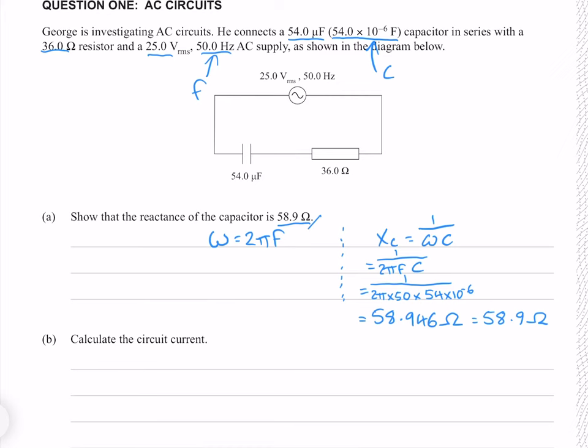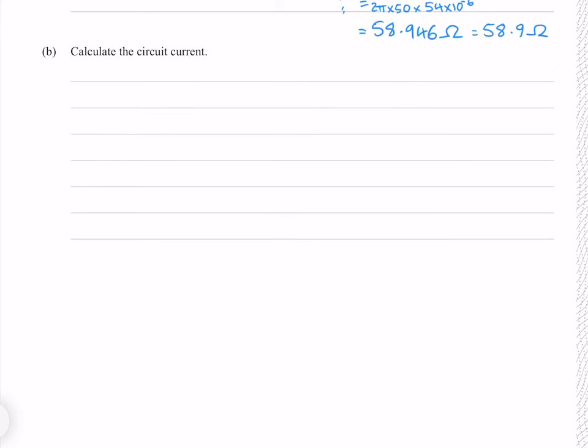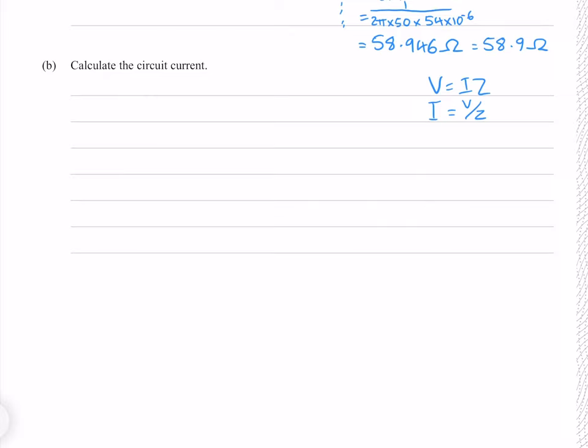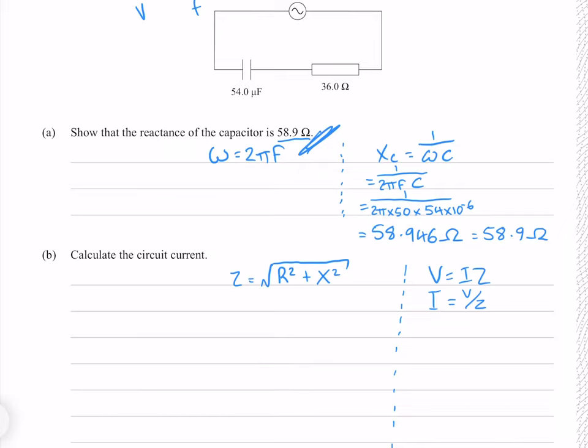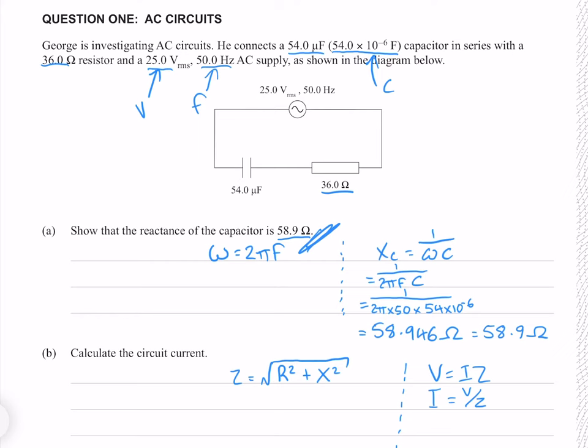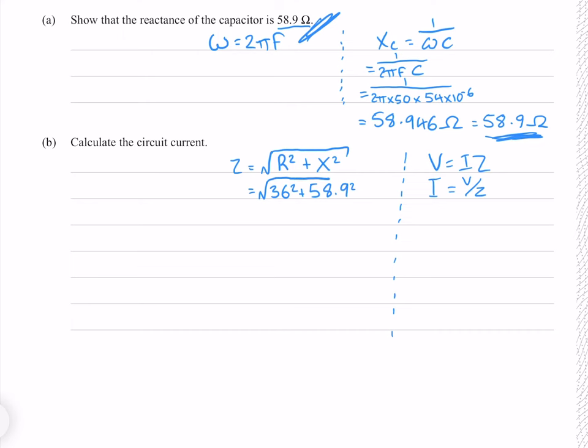Calculate the circuit current. We can find this using V equals IZ, rearranging to get I equals voltage over Z. Our voltage is the source voltage given, but we don't know Z, the impedance. The equation for impedance gives us 69.0 ohms to 3 significant figures using our resistance of 36 ohms and the reactance from the last question. This gives a current of 0.362 amps to 3 significant figures.